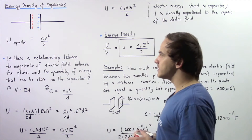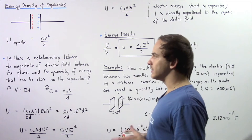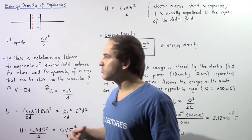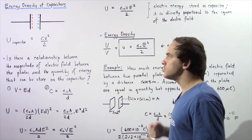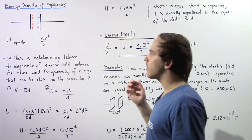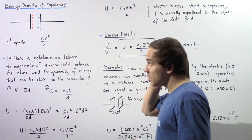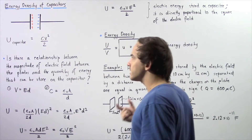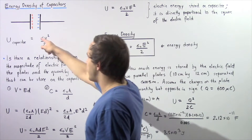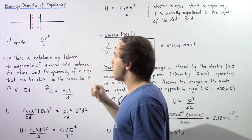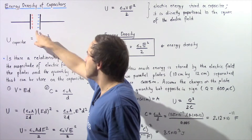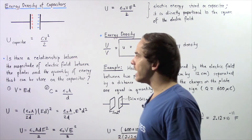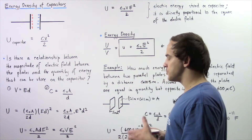In the previous lecture we were able to calculate the total quantity of electric energy that can be stored on our parallel plate capacitor. We said it's given by taking the product of our capacitance C and the square of our voltage between our two plates and dividing that product by a factor of two.